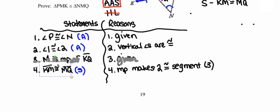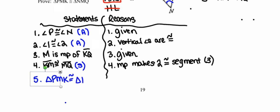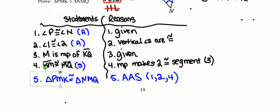At this point I've written about the first pair of congruent angles, the second pair of congruent angles, and the pair of congruent sides. So I've written everything I need to establish that triangle PMK is congruent to triangle NMQ by AAS — citing the angles from statements 1 and 2, and the sides from statement 4.